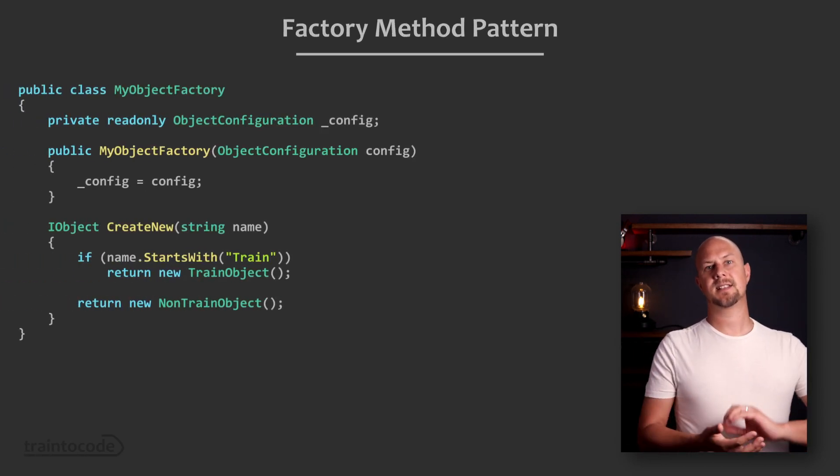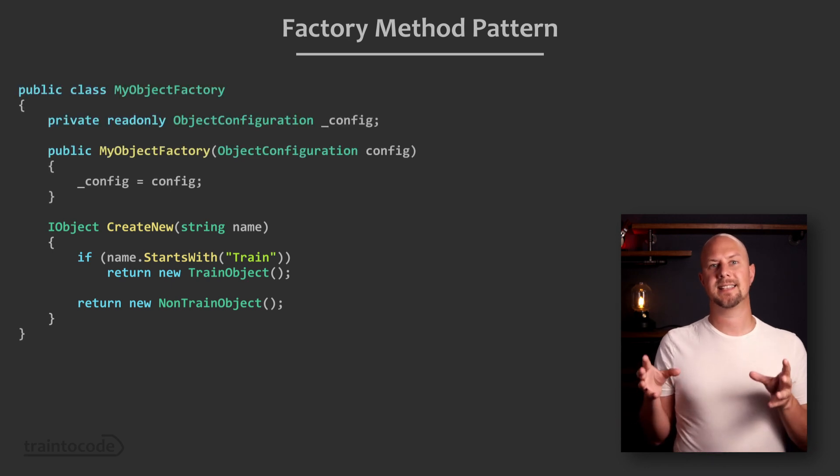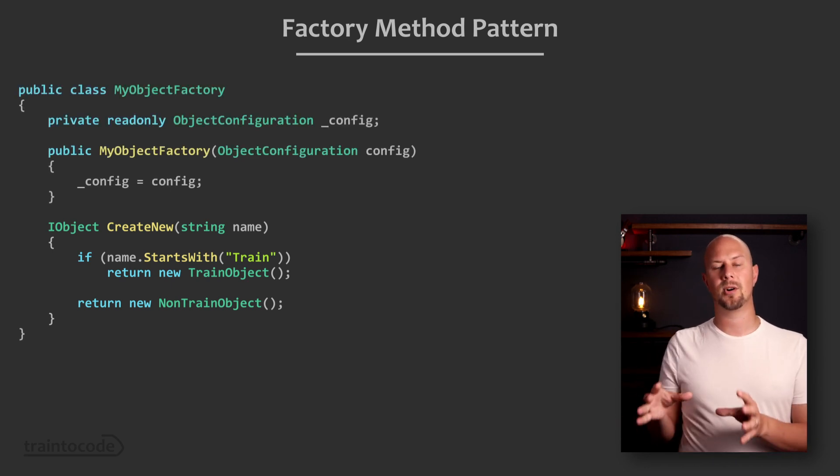The factory method pattern is a design pattern that you might come across when working with heavily object-oriented languages such as Java or C-sharp. Like with most design patterns, factory methods exist to add a simpler abstraction around a more complicated concept. In this video we're going to cover the problem that factory methods are solving and how they solve it.